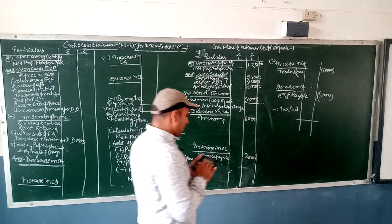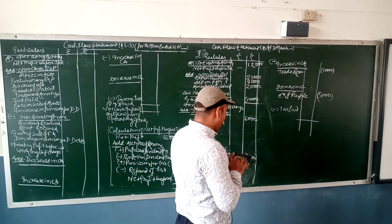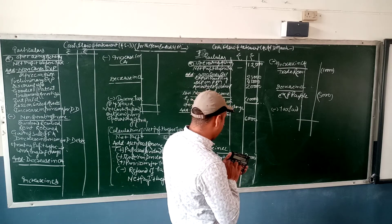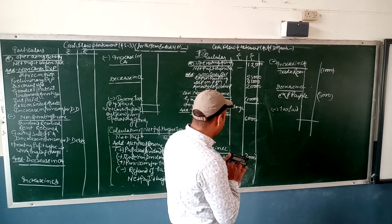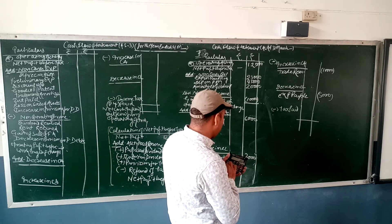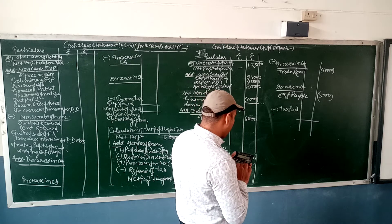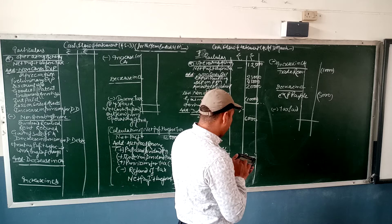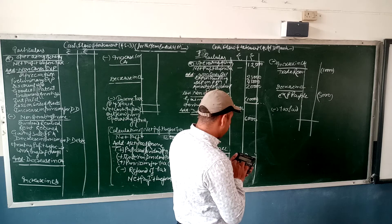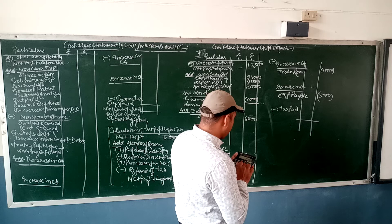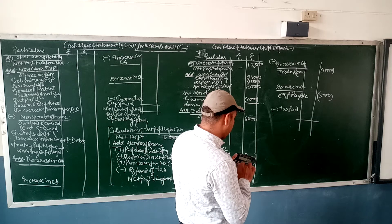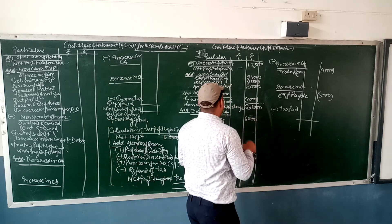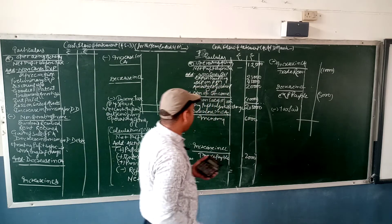Let's check the calculations: 1,25,000 plus 25,000 plus 45,000 plus 20,000 minus 10,000 rupees. So operating profit before working capital changes comes to 2,05,000.